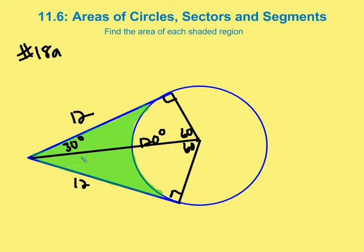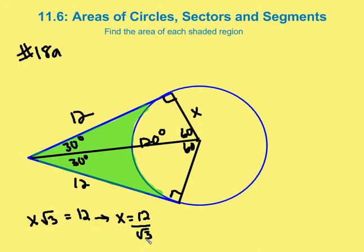I have a 30-60-90 triangle. If the side opposite the 60° angle is 12, then the side opposite the 30° angle is 12 divided by root 3. So x times root 3 equals 12, meaning x equals 12 over root 3. We rationalize the denominator by multiplying numerator and denominator by root 3, giving us 12 root 3 over 3, which equals 4 root 3.